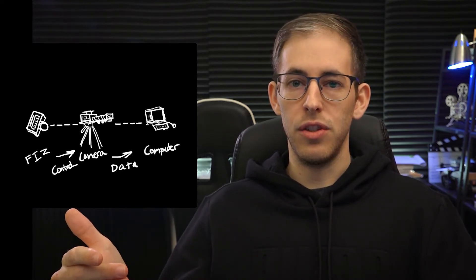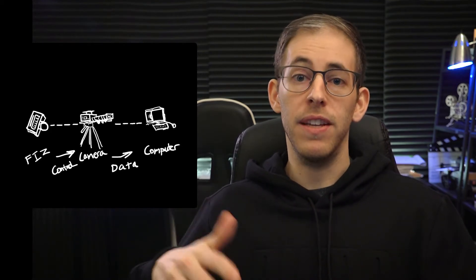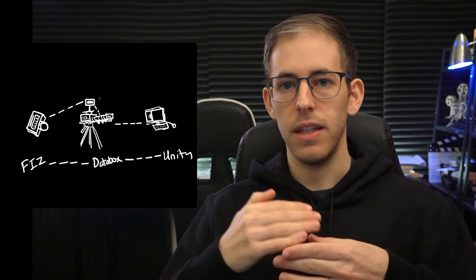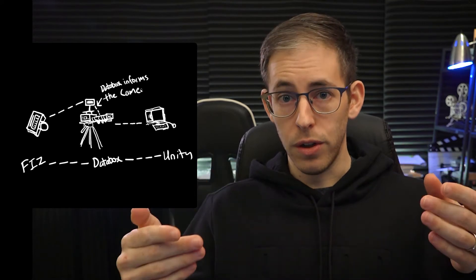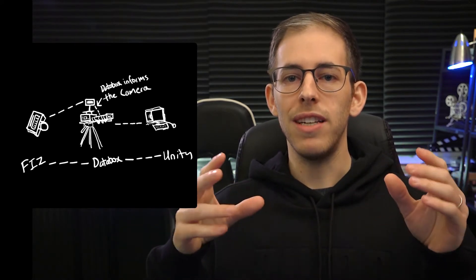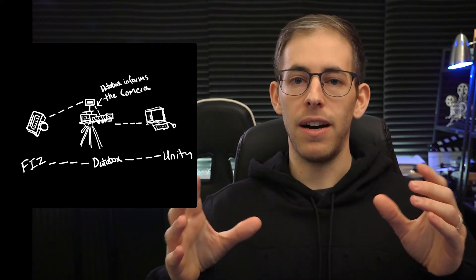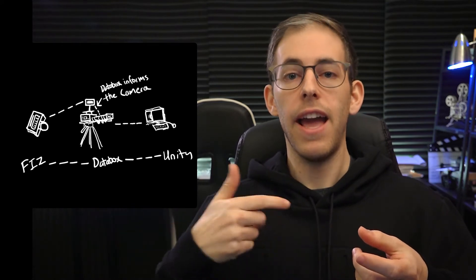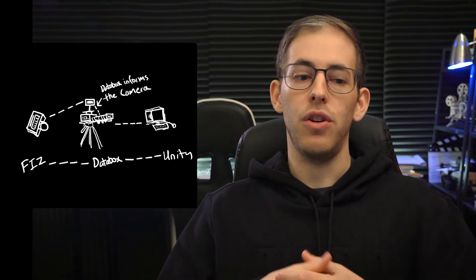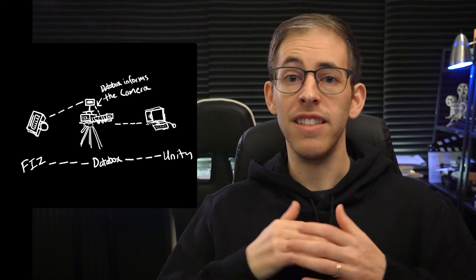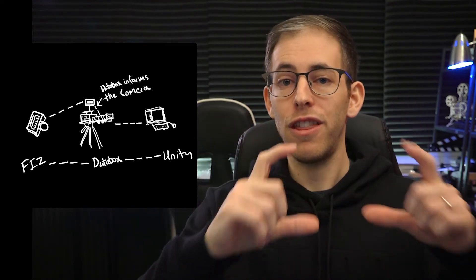The second way of controlling data is to use a data box. A data box is a third party that sits between the FIZ controller — the hand unit — and Unity. It's also between your camera and the focus system, so you don't need to replace your existing hand unit. The data box will intercept the signal, send the data to the camera, and at the same time send the data into the computer. So your $30,000 Preston hand unit still works perfectly fine, with nothing about that workflow changing other than adding a third-party data box.